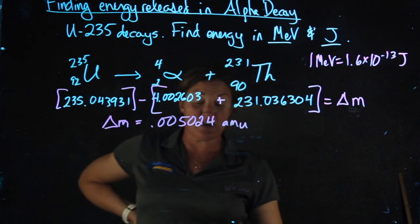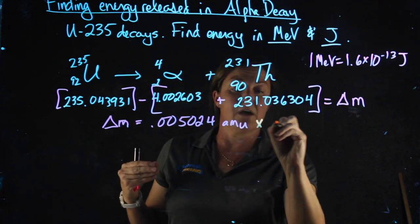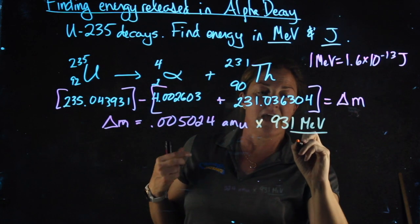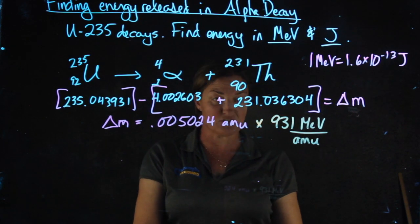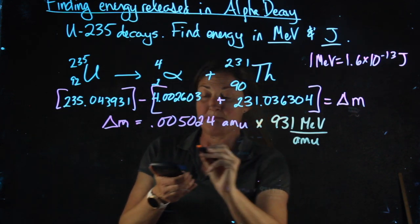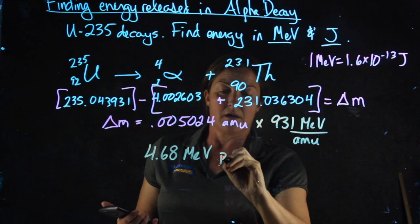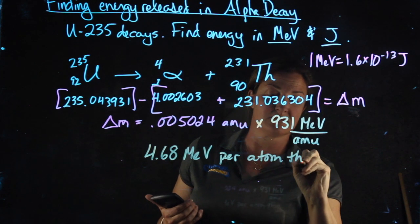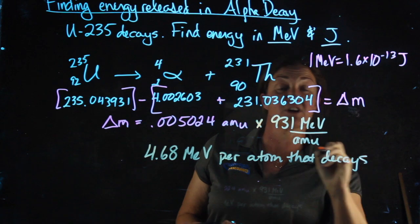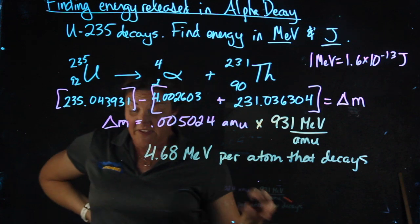If I want to figure out how much energy, I'm going to use the same conversion factor we used before, which is we know 1 amu has an energy of 931 megaelectron volts. So multiplying this out, I get 4.68 MeV per single atom that decays. Some of our later problems are going to ask you how much energy is released if far more than one atom decays. This is A.